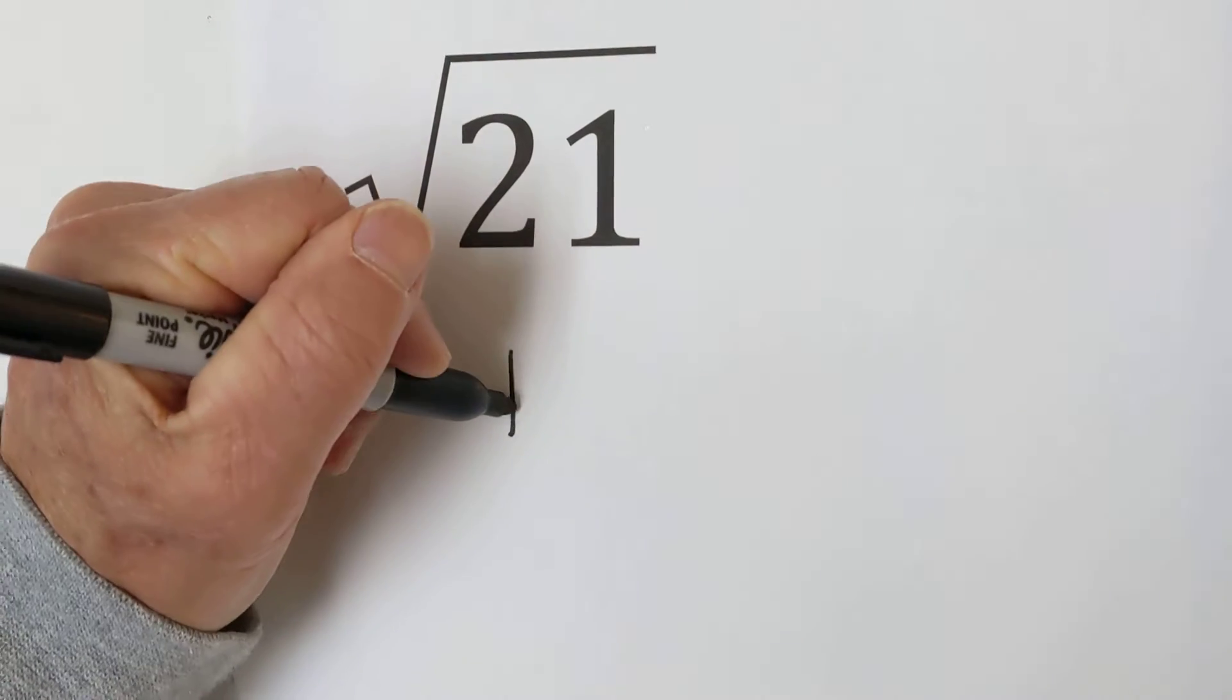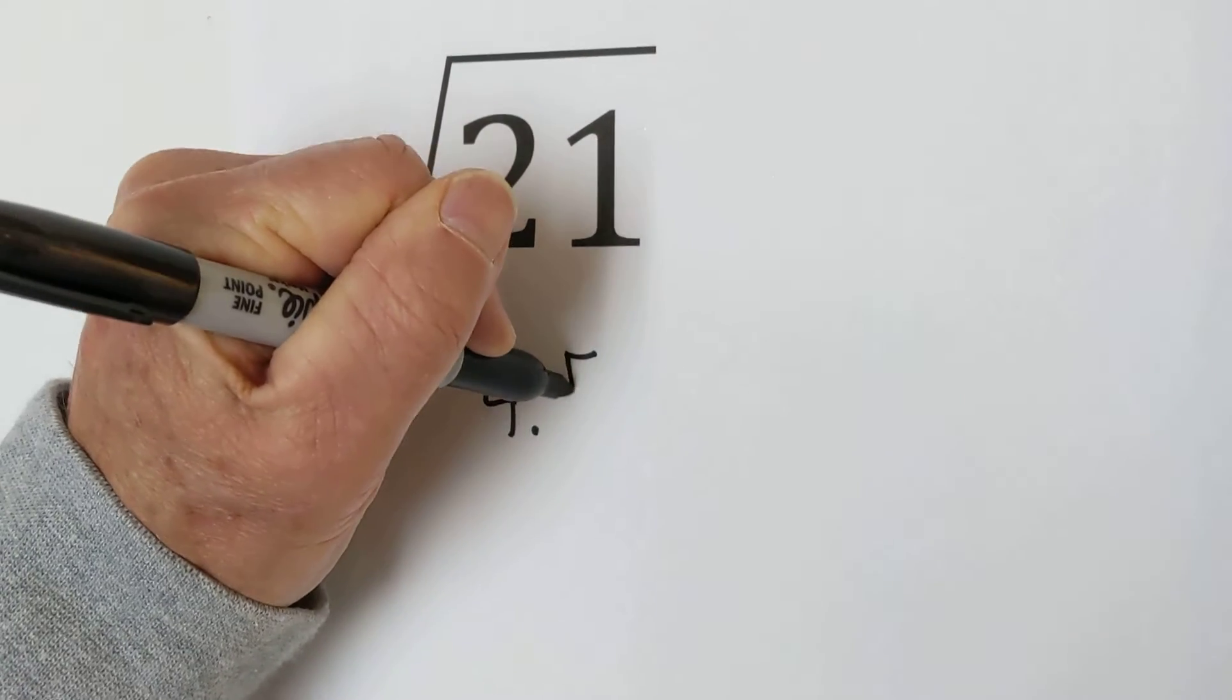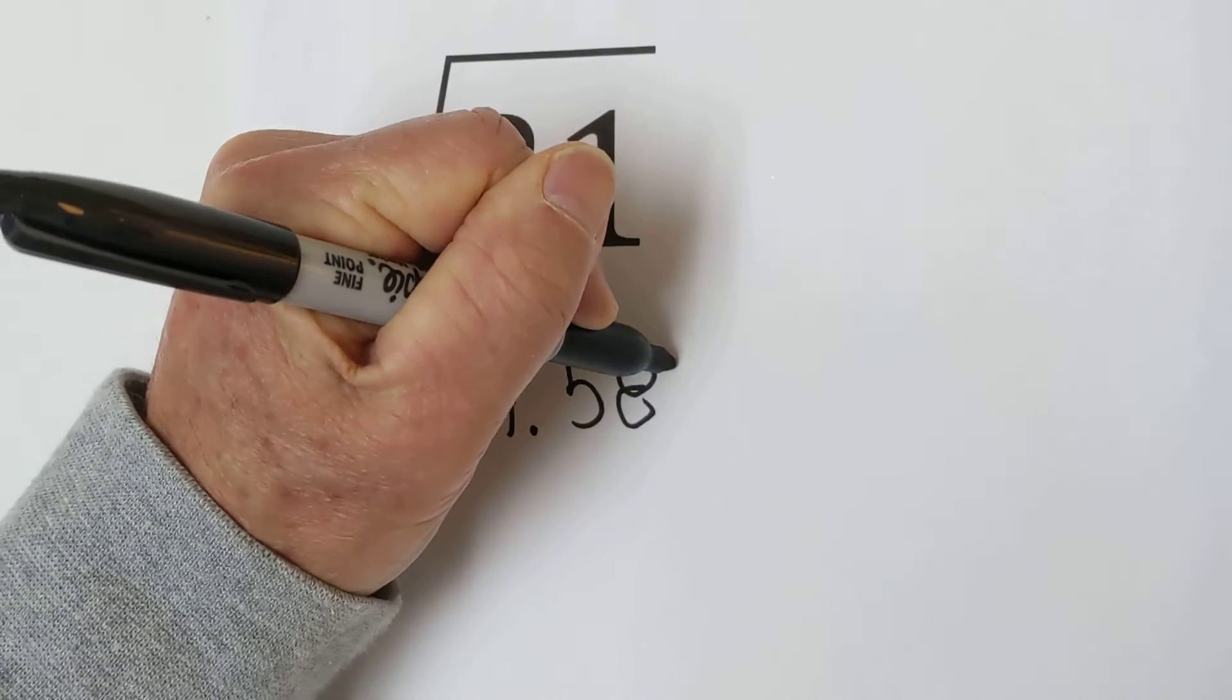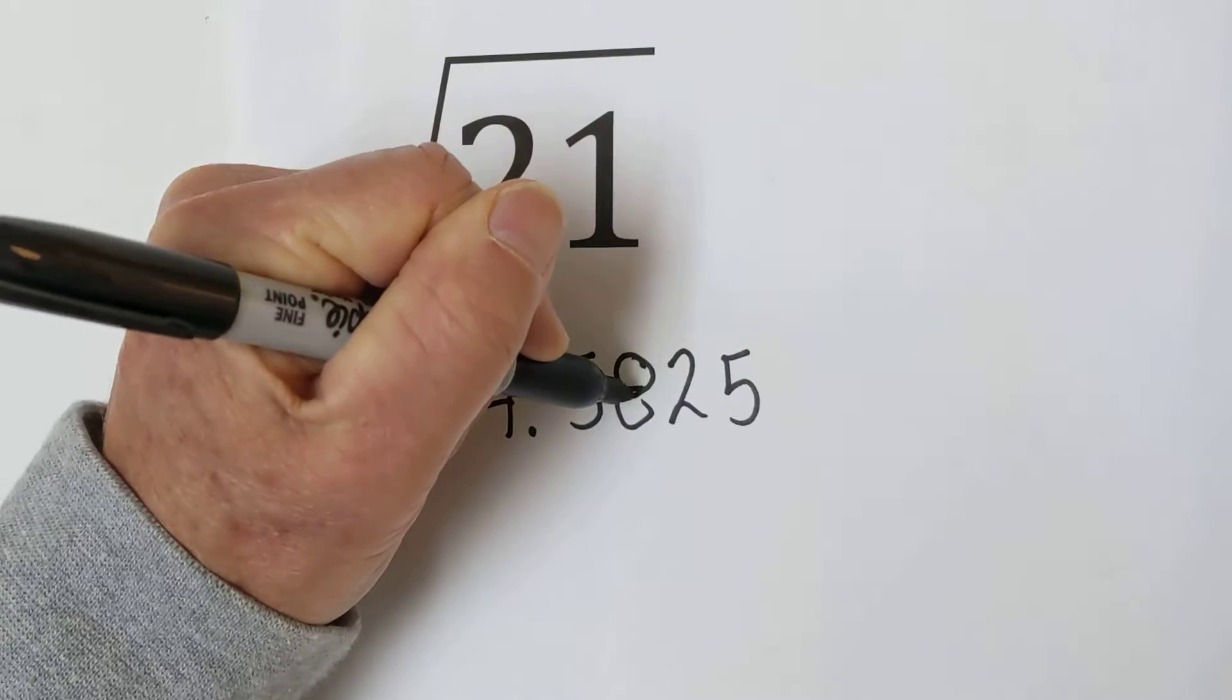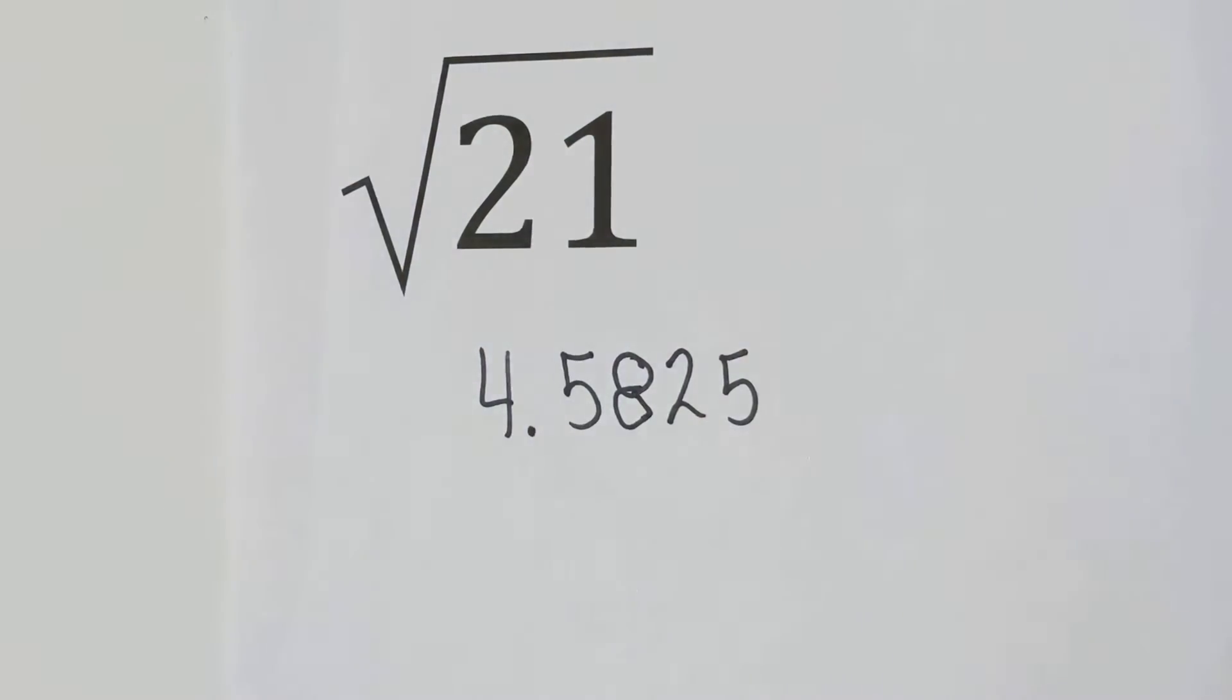In decimal form, it is 4.5825, and I'm only going to four places. It is what is called a non-terminal decimal, so it's irrational.